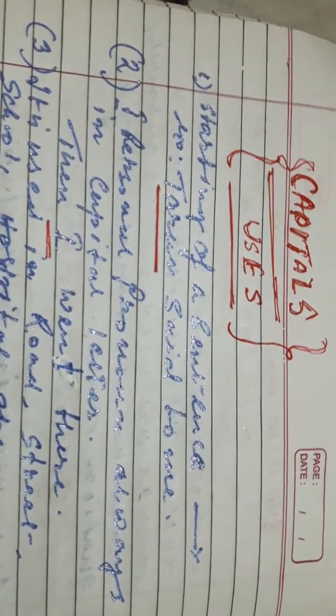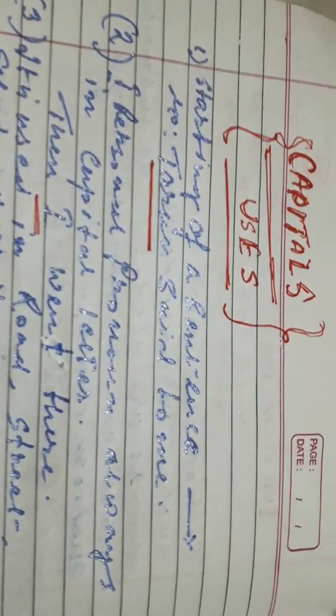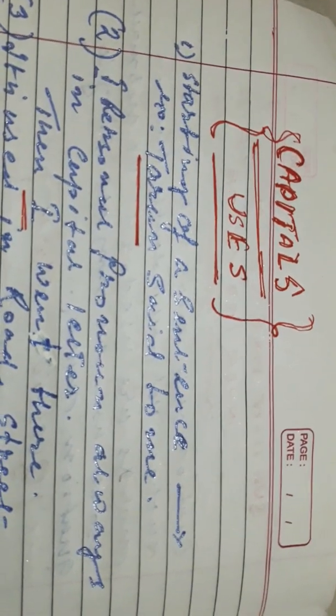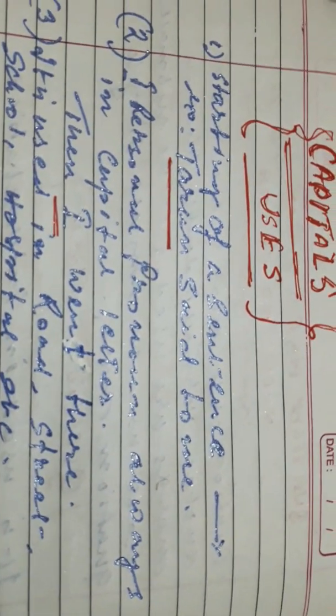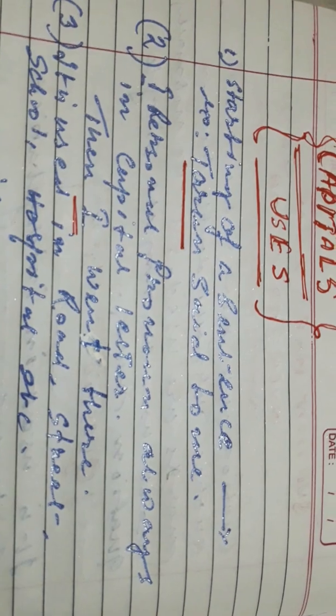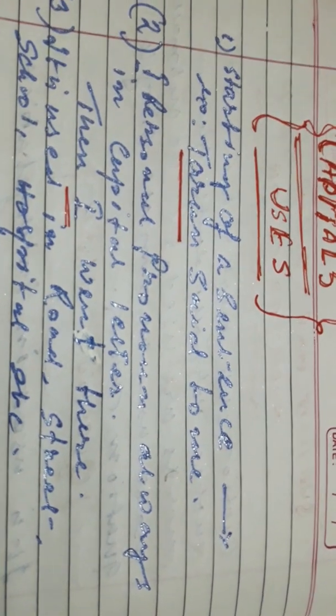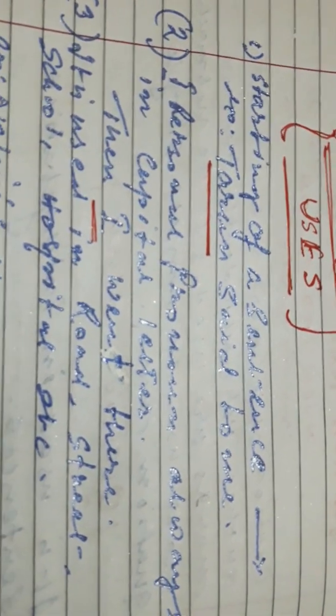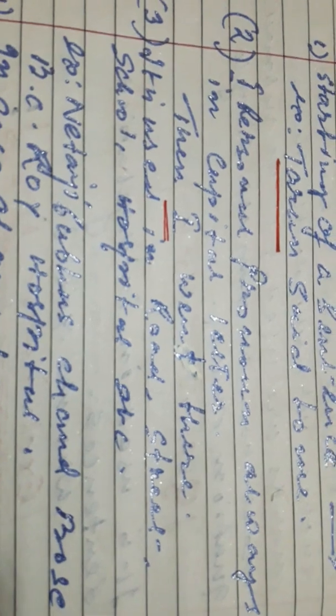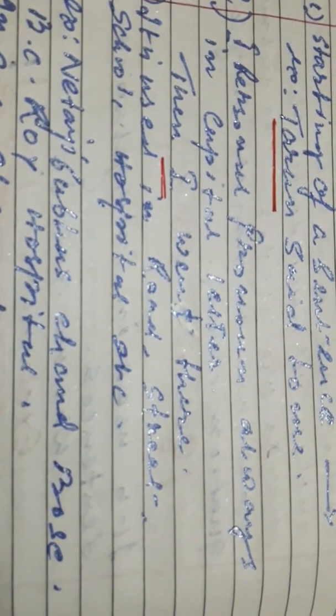We will see where capital words are used. First, at the starting of a sentence — when you start a sentence, the first word is capital. Like 'Thurun said to me' — here Thurun is the starting word, so T is capital. Also, the personal pronoun 'I' is always capital, like 'I went there.'